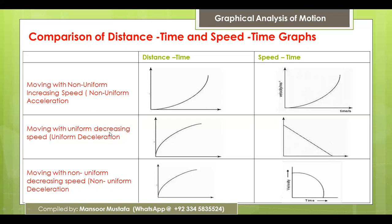Comparing distance-time and speed-time graphs for the same cases: object at rest — distance-time shows a horizontal line above the x-axis; speed-time shows a horizontal line on the x-axis. Constant speed — distance-time shows a straight diagonal line; speed-time shows a horizontal line above the x-axis. For uniformly increasing or decreasing speed, the distance-time graph shape is the same whether uniform or non-uniform, but the speed-time graph differs — straight line for uniform, curve for non-uniform.